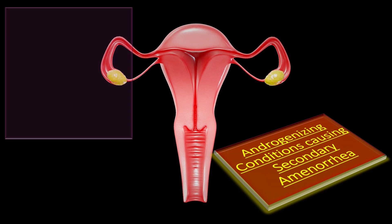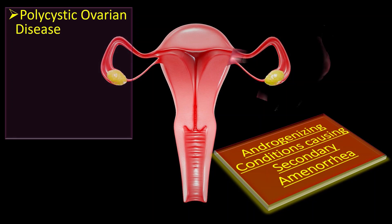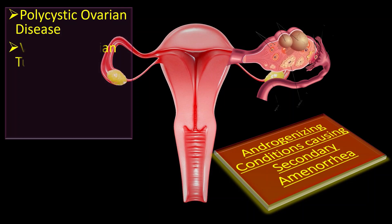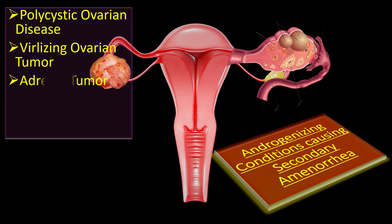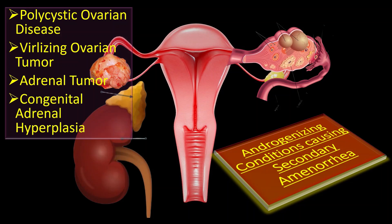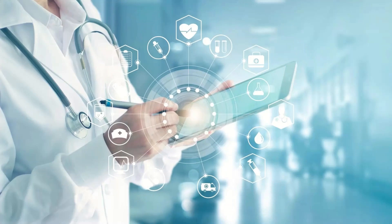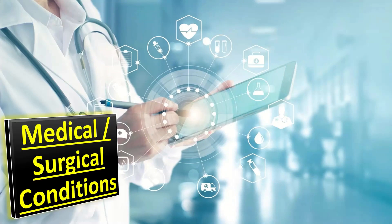The androgenizing conditions causing secondary amenorrhea include: polycystic ovarian disease, virilizing ovarian tumor, adrenal tumor, and congenital adrenal hyperplasia.